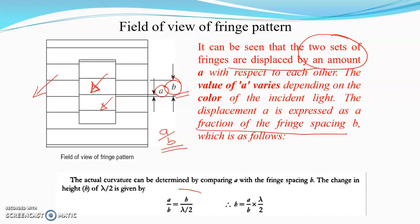This is given by the equation: a/b = h/(λ/2), where h is the height change and λ is the wavelength.